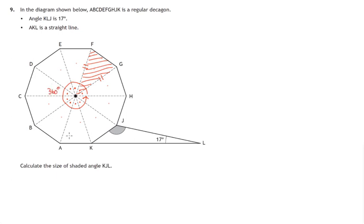So each one of these angles must be a tenth of 360 degrees, in other words, 36 degrees.